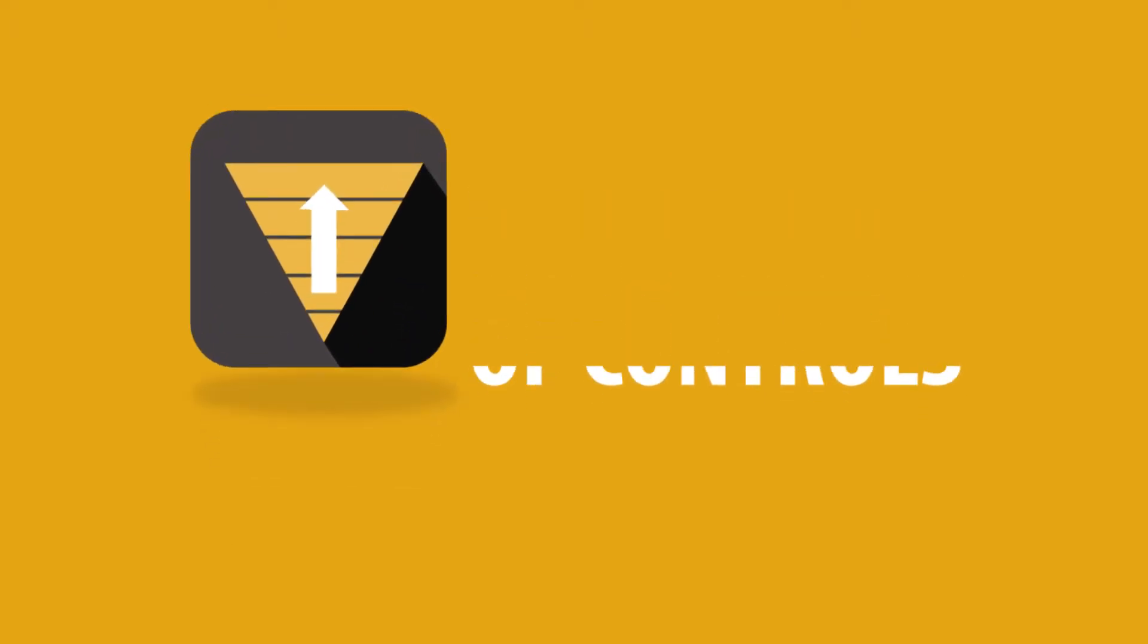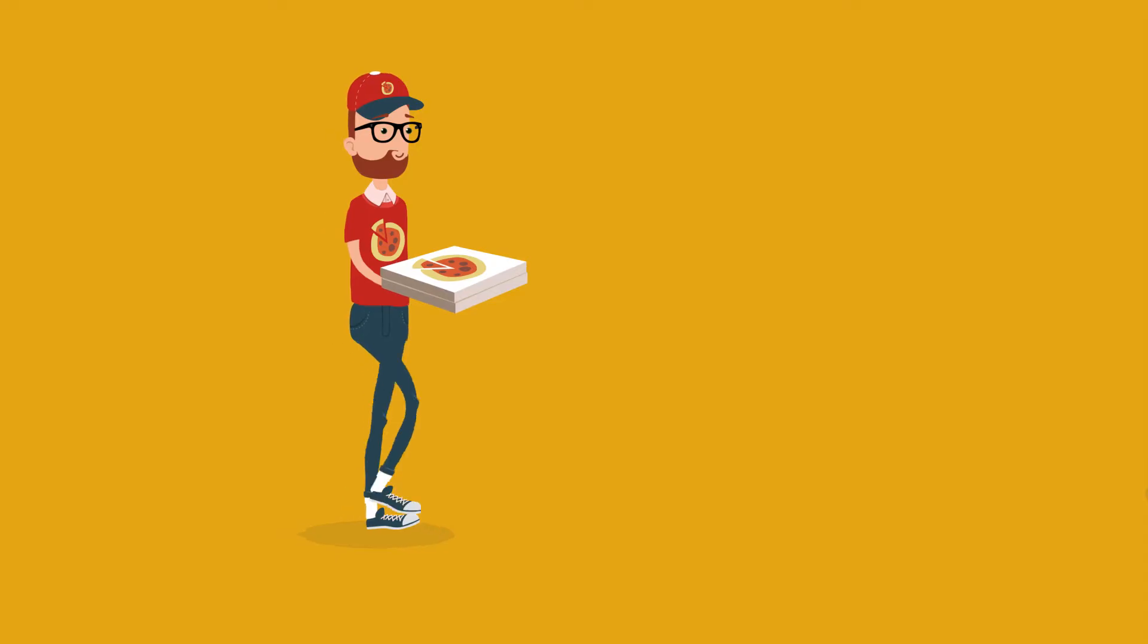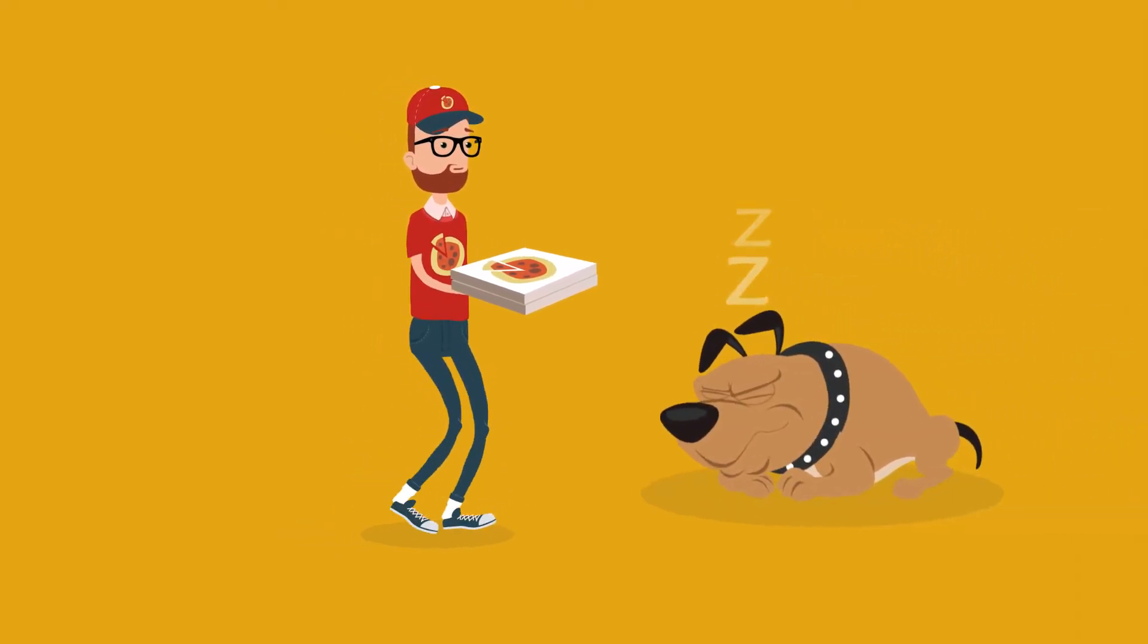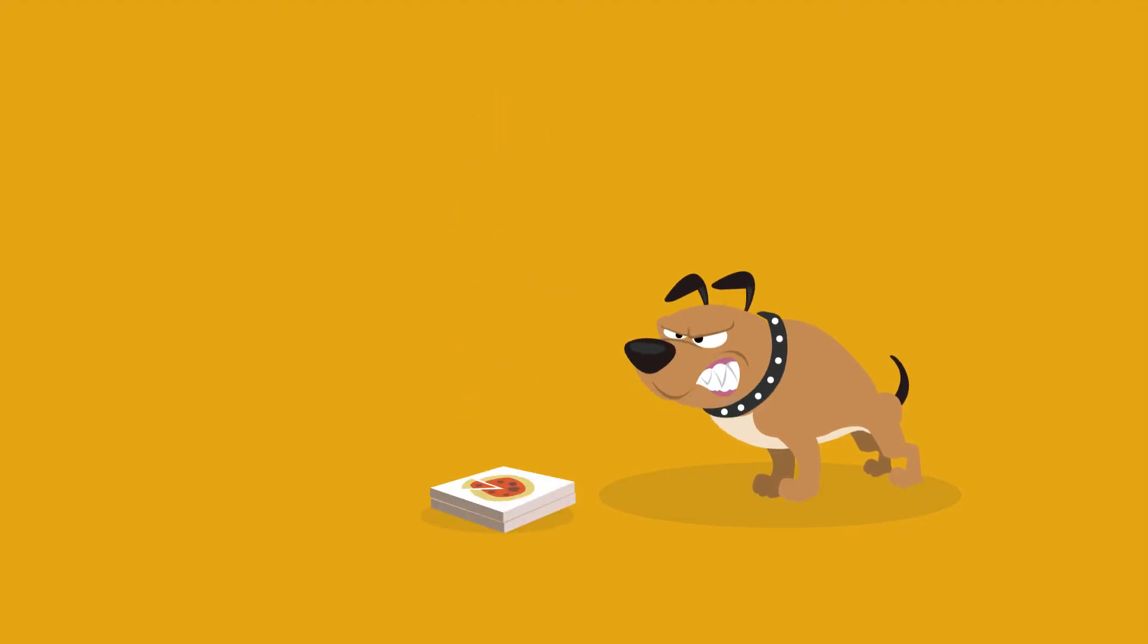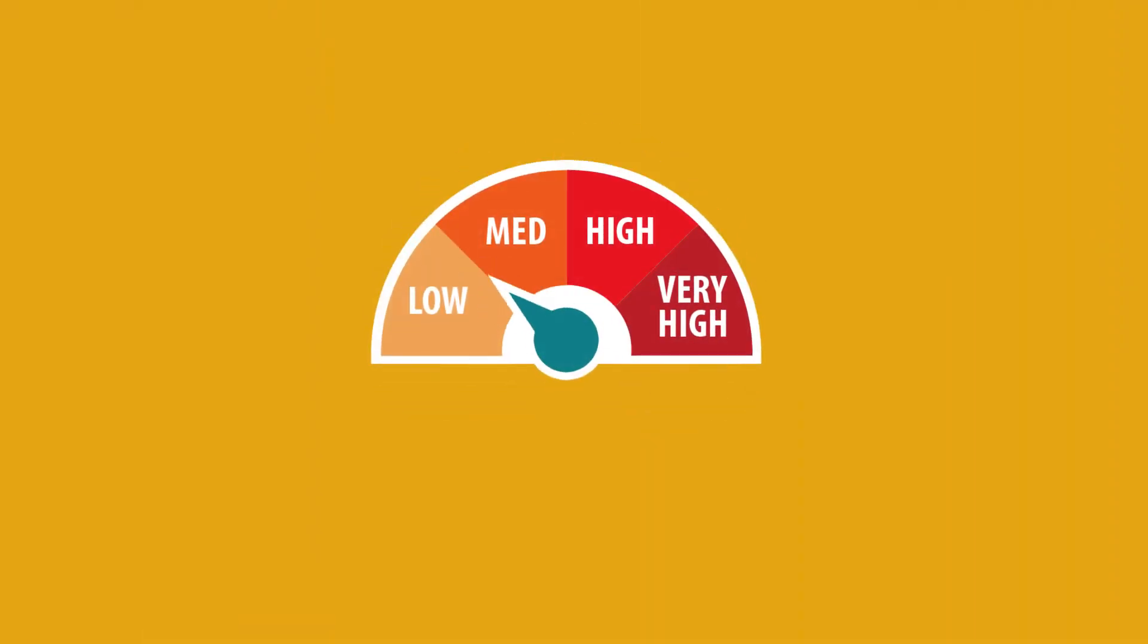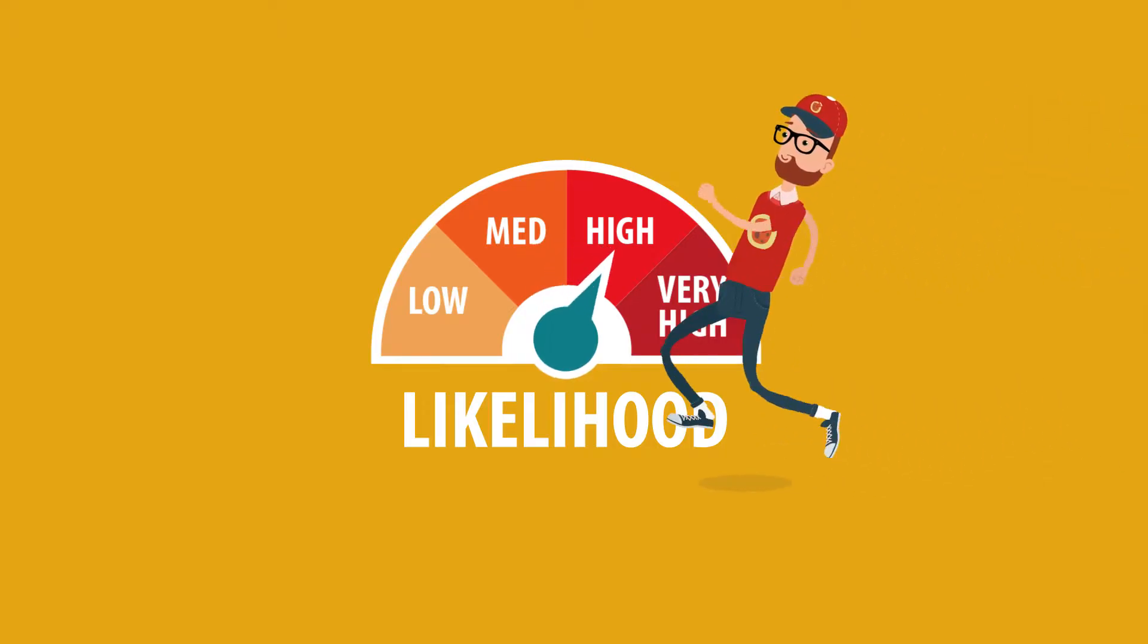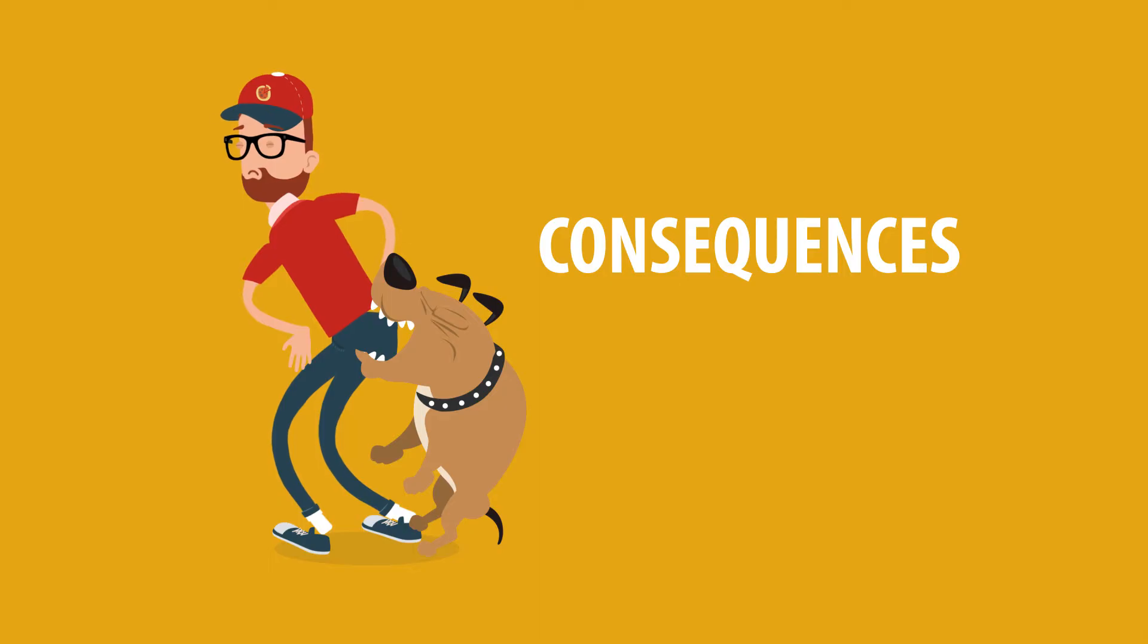The hierarchy of controls. The level of risk associated with an event can be established by assessing the chance of the event happening, likelihood, and the potential harm or damage the event could cause, consequences.